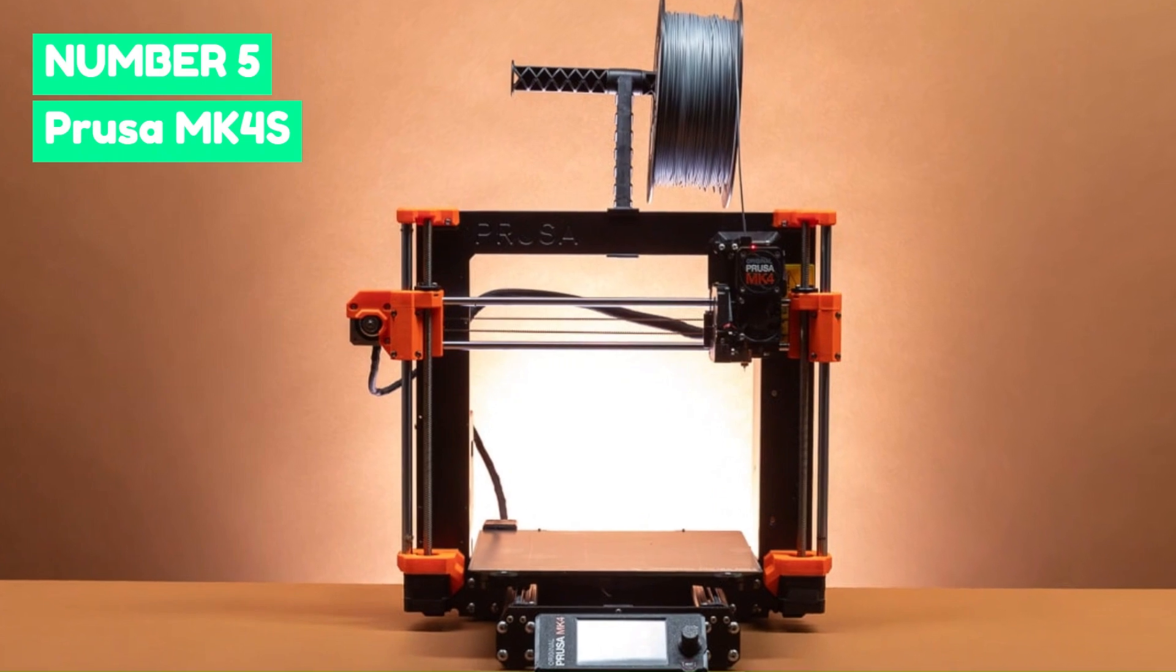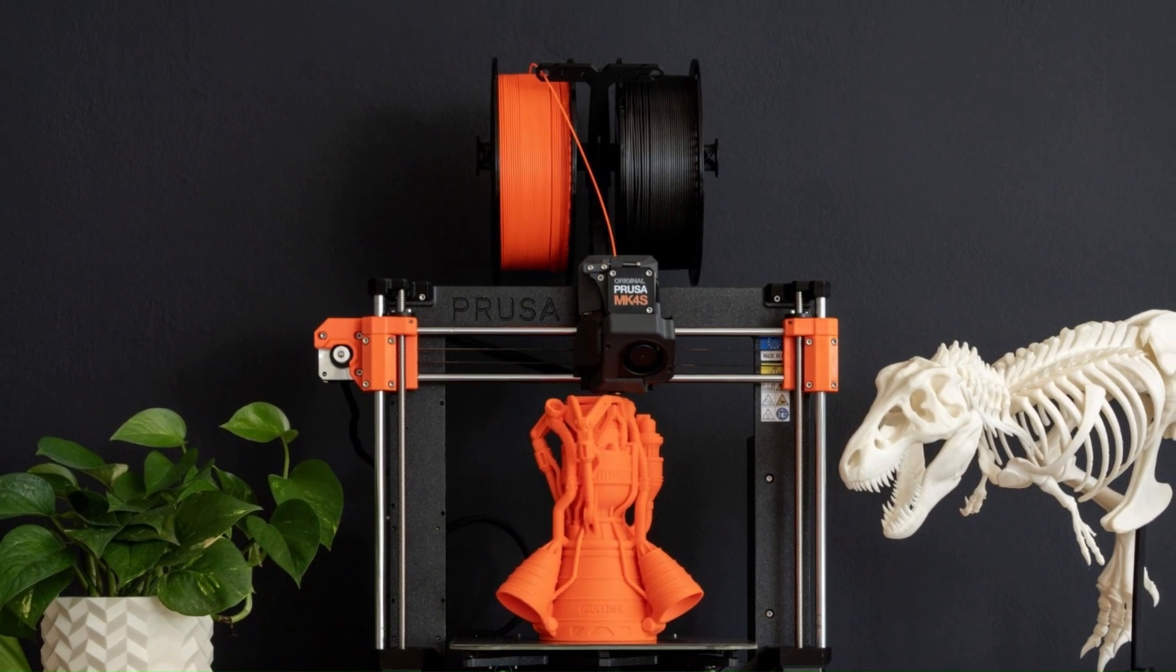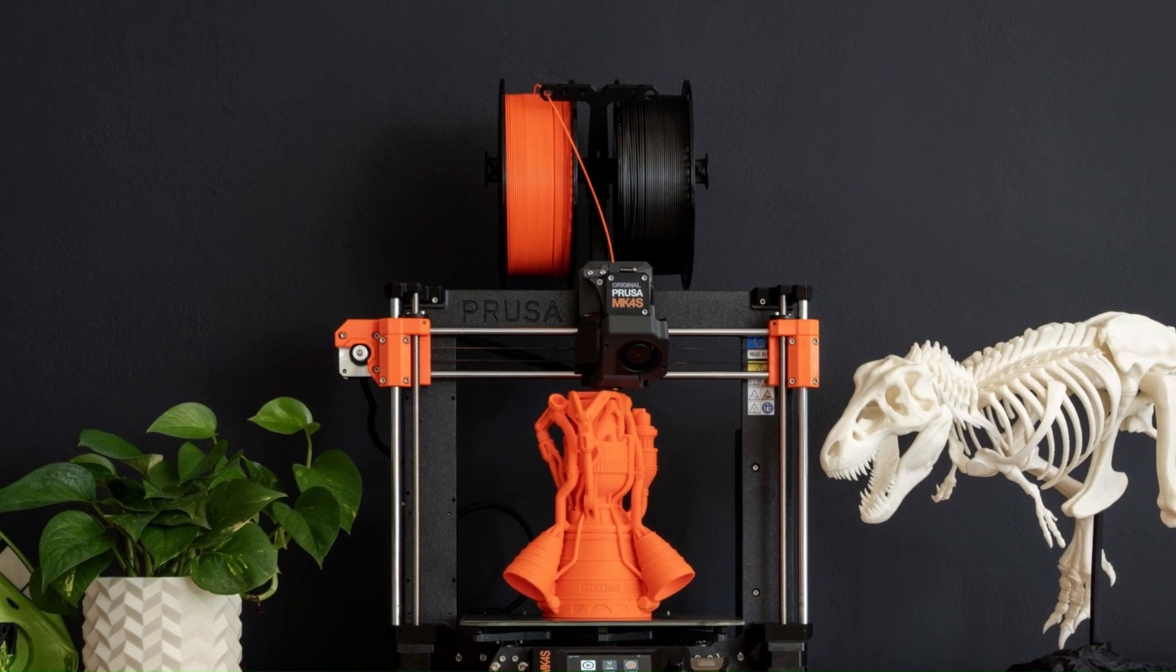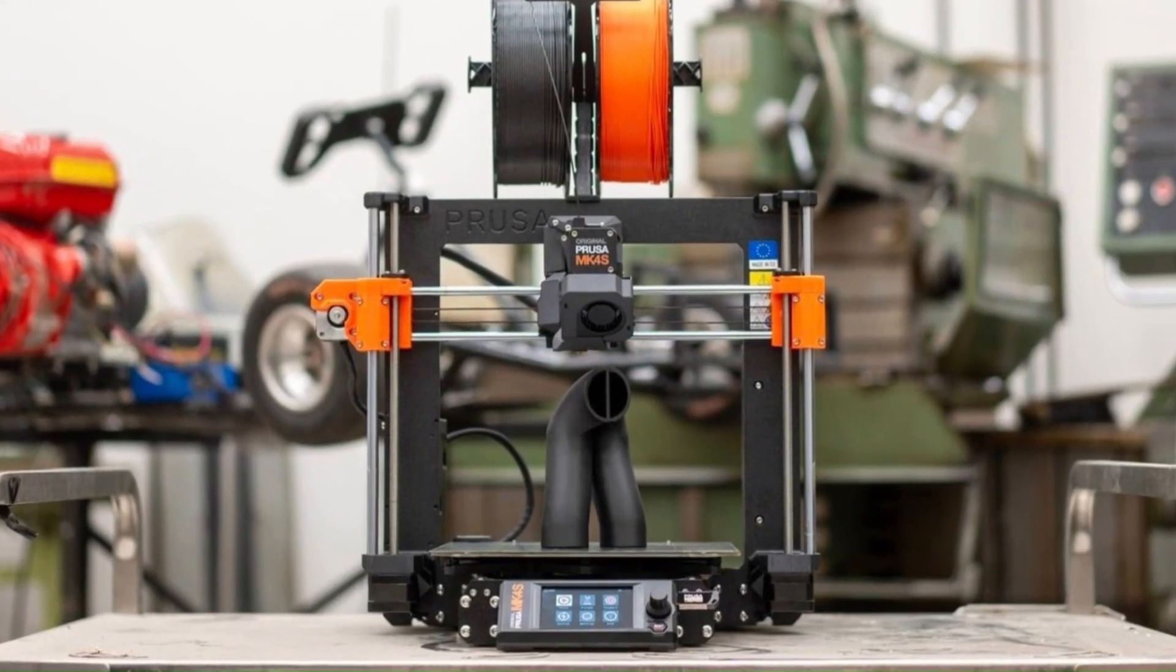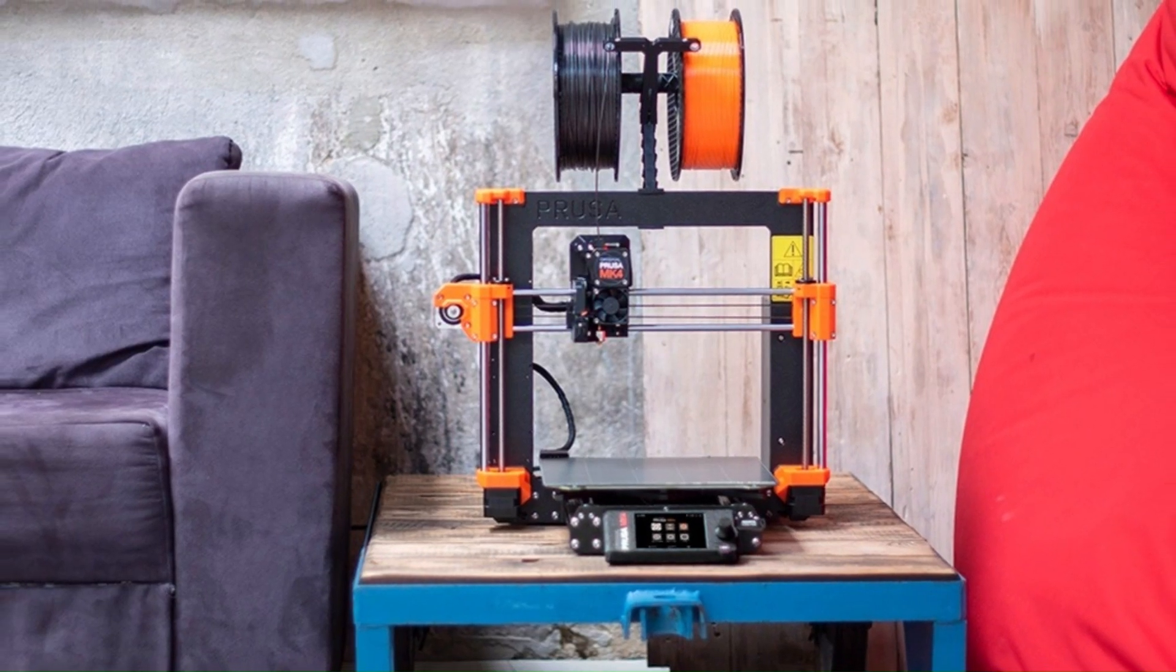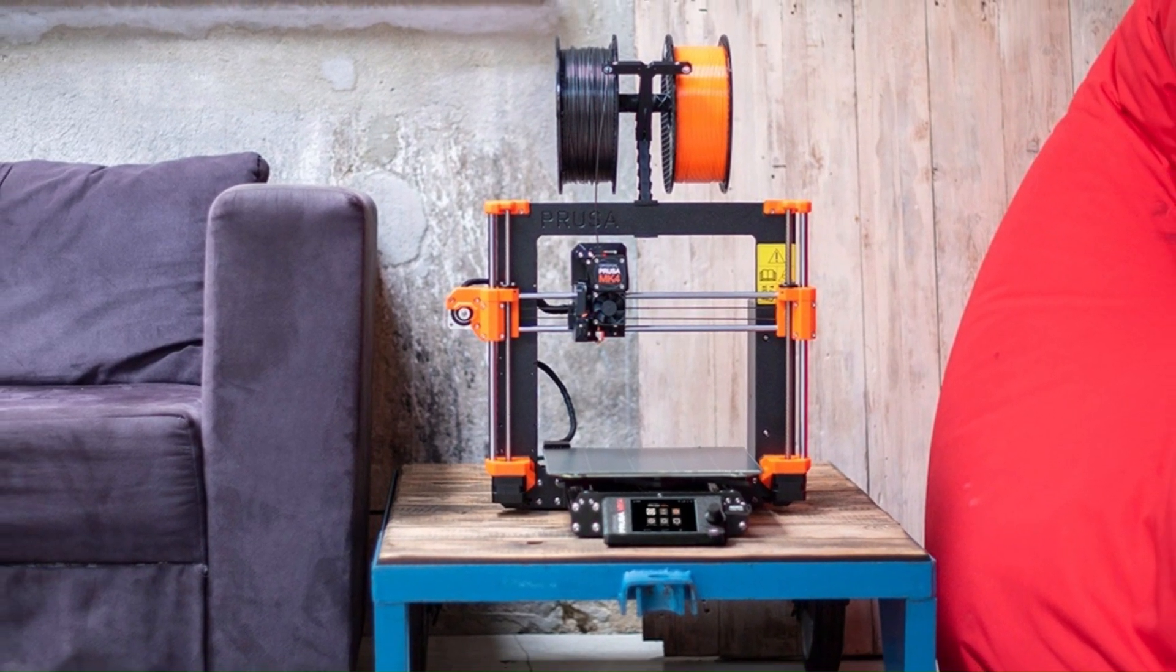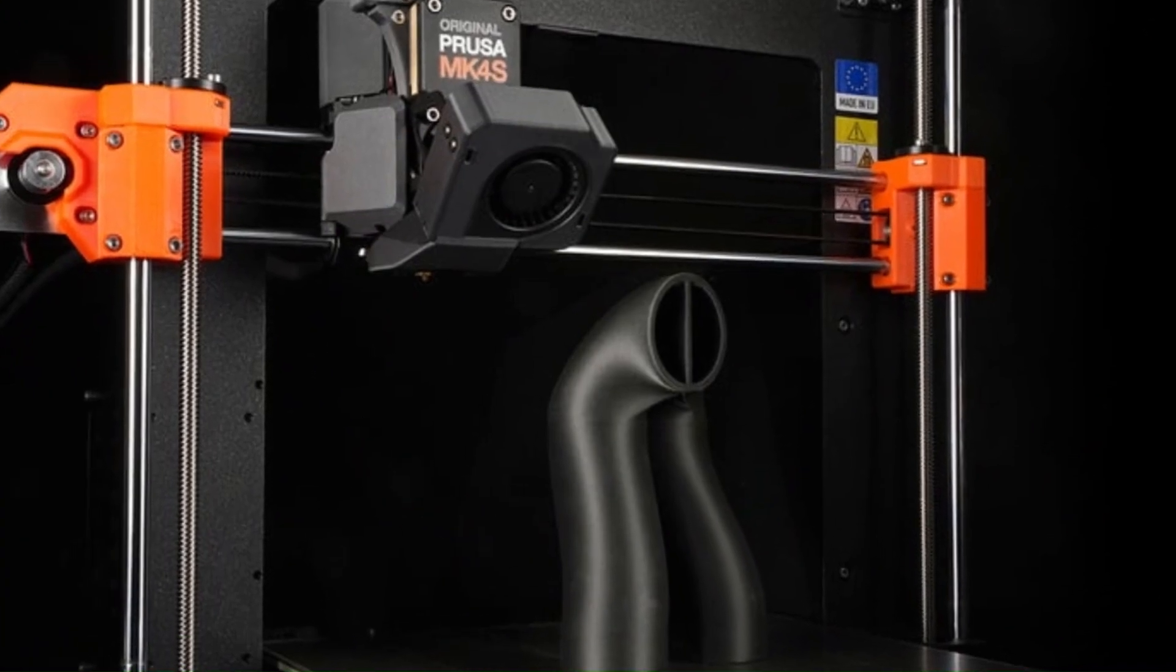Number 5: Prusa MK4S. The Prusa MK4S builds upon the success of the MK3, refining key aspects of speed, reliability, and ease of use. One of its standout features is improved cooling, allowing for better overhangs and smoother prints. The Wi-Fi and Ethernet connectivity make remote monitoring and control more seamless, a big plus for those managing multiple prints.